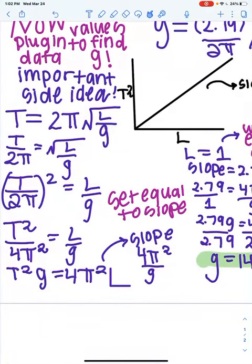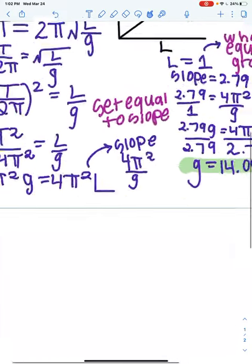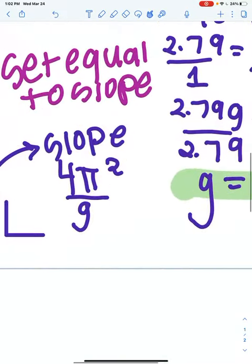So we start with the same equation again. Period is equal to 2π times the square root of L divided by g. And then we square both sides to get rid of the radical. And then we have T squared over 4π squared, because you just distribute the squared, equals L divided by g. And then we solve for g. So then you just get 4π squared over g.